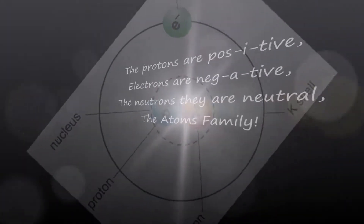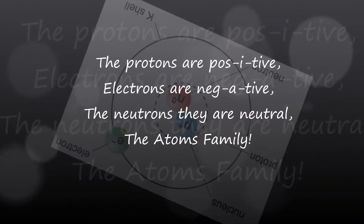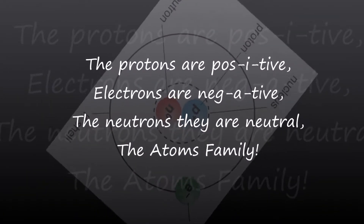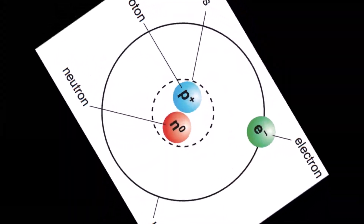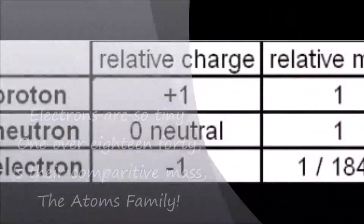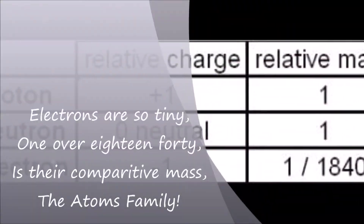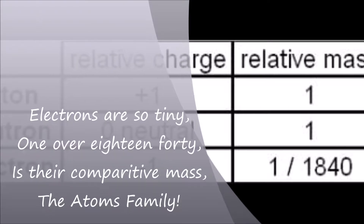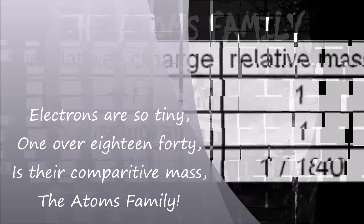The protons are positive, electrons are negative, the neutrons they are neutral — the atoms family. Electrons are so tiny, 1 over 1840 is their comparative mass, the atoms family.